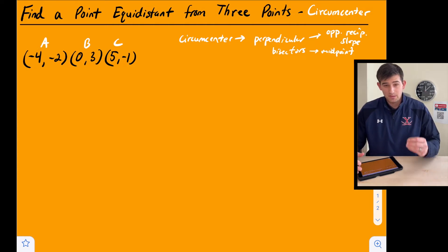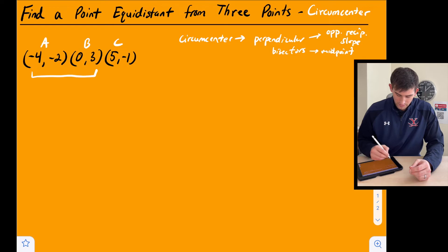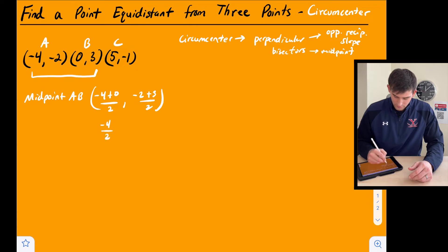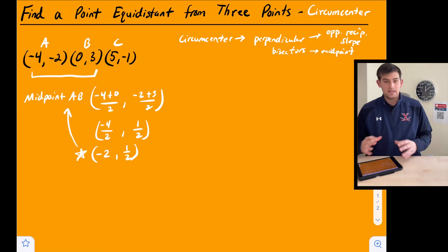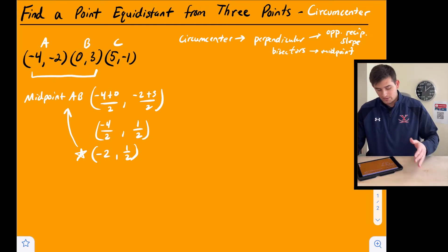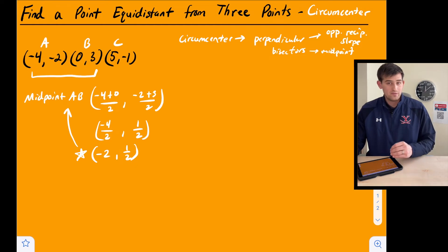We have options when we start — we just need to pick two points and find their midpoint. Let's do points A and B. To find the midpoint of AB, we add the x-coordinates: negative 4 plus 0, divided by 2; and add the y-coordinates: negative 2 plus 3, divided by 2. That gives us negative 4 over 2 and 1 over 2, so our midpoint is negative 2, one-half. Our perpendicular bisector will pass through this midpoint.